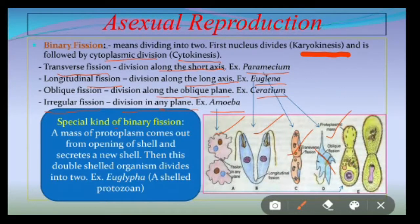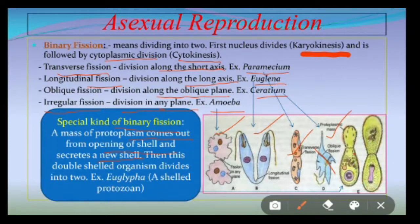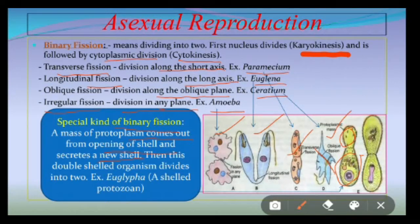Along with these different types of binary fission, a special kind of binary fission can be seen in a few protozoans where a mass of protoplasm comes out through an opening of the shelled protozoan and secretes a new shell. This double-shelled organism — one old shell and one new shell — the protoplasmic mass comes out into the new shell, grows, and then divides, producing two organisms. This can be seen in shelled protozoans; the best example is Euglypha.